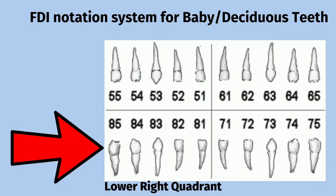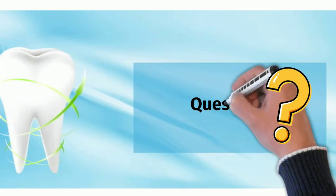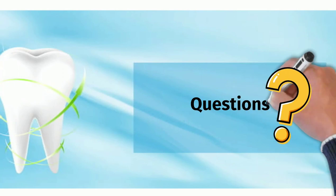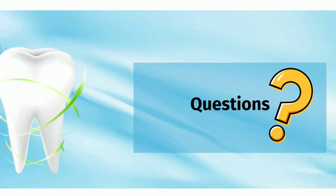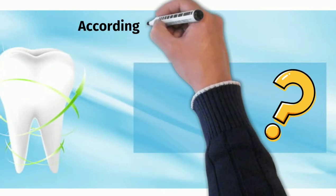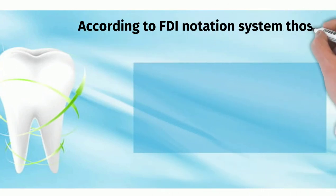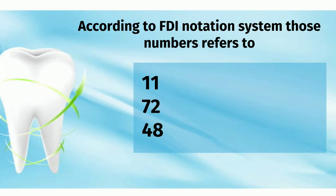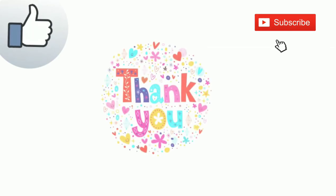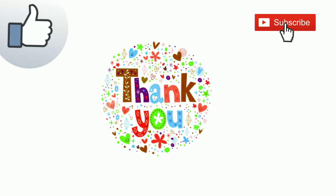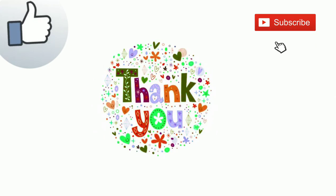The last part of our video is the questions. Please write your answers in the comments below. According to the FDI notation system, what do these numbers refer to? The first one: 1-1. The second one: 7-2. The third one: 4-8. I hope you understand the FDI notation system. Thank you. Please don't forget to subscribe and like this video, and wait for the third part of the notation systems.